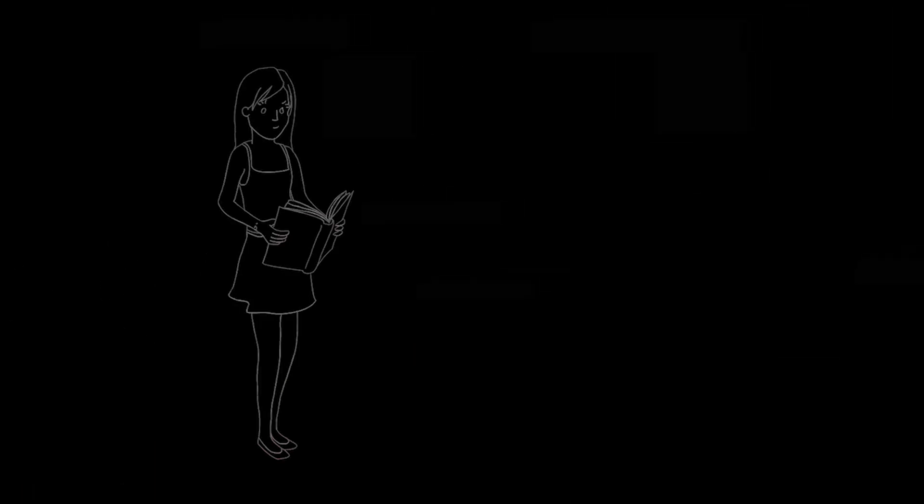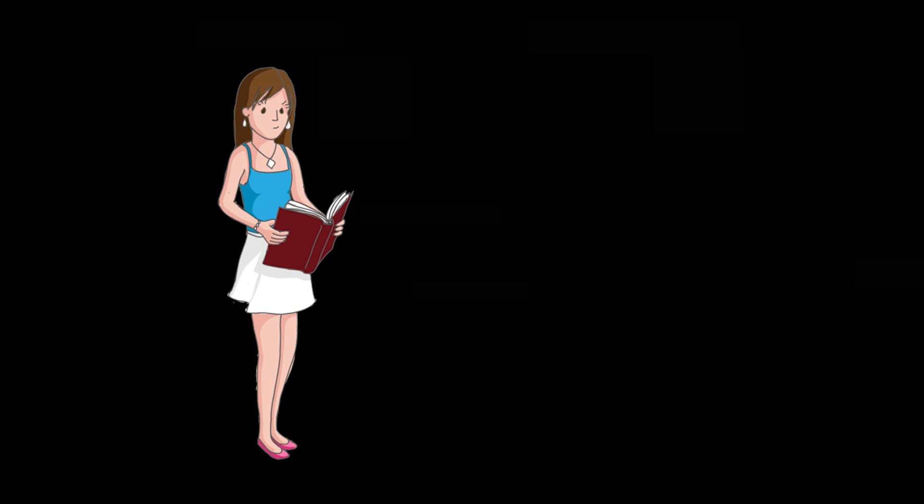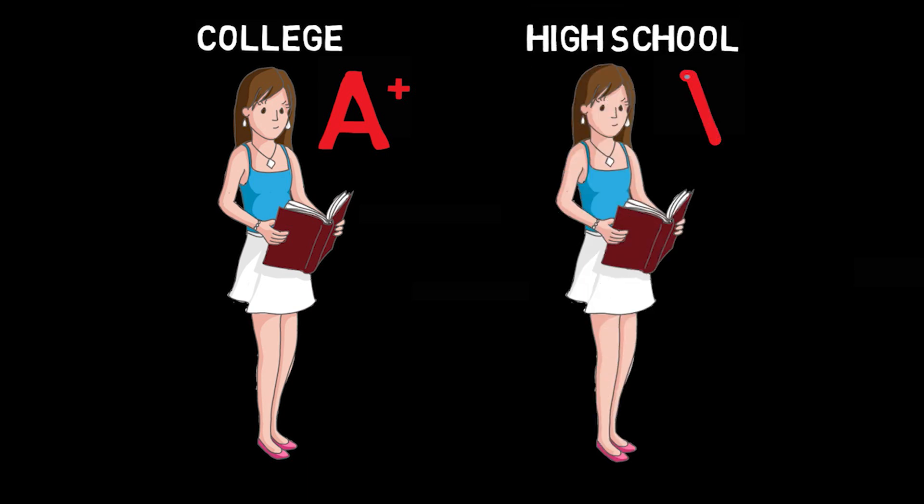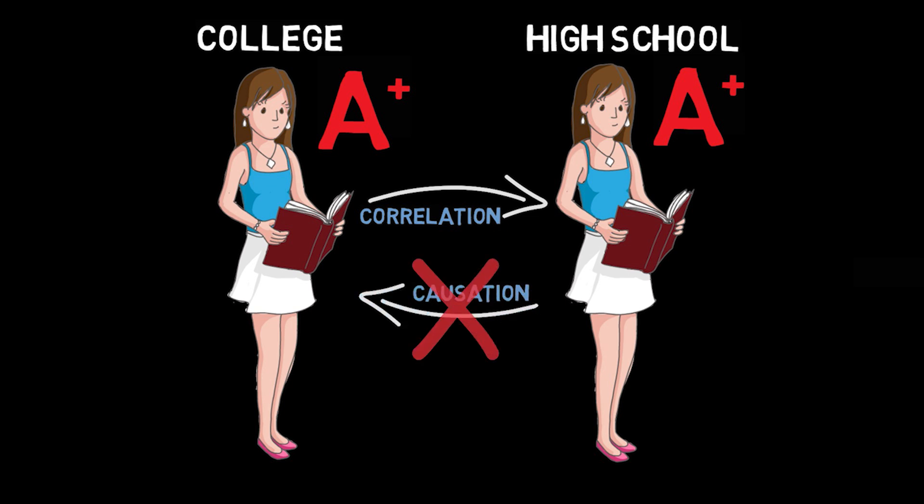So let's consider an example where two events are positively correlated when neither causes the other. Consider this again. People with higher grades in college have higher grades in high school. Here, earning higher grades in college is positively correlated with earning higher grades in high school. Now, it's incorrect, as we've discussed, to claim that earning high grades in high school always causes someone to earn high grades in college.